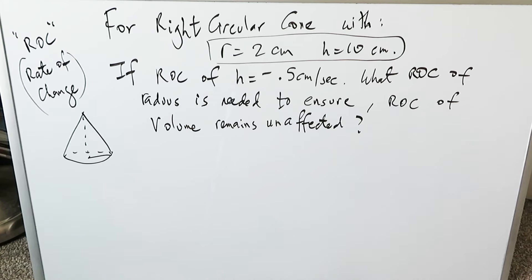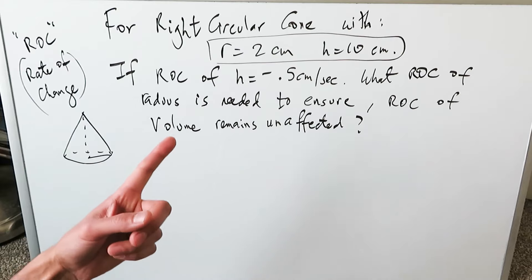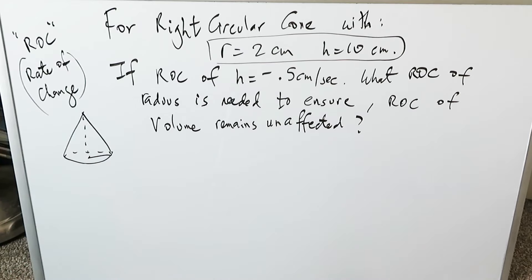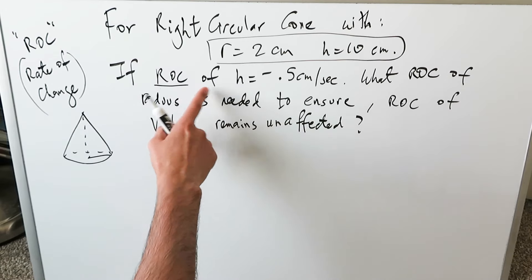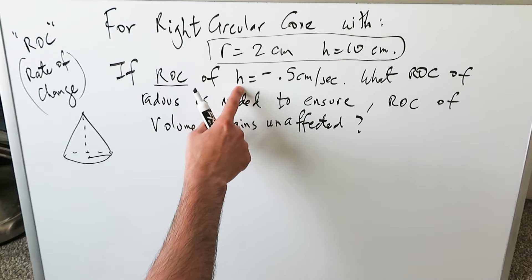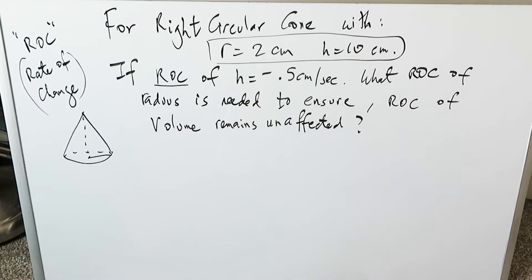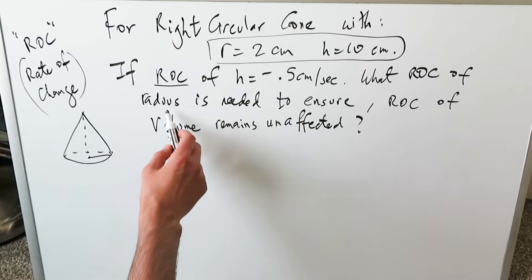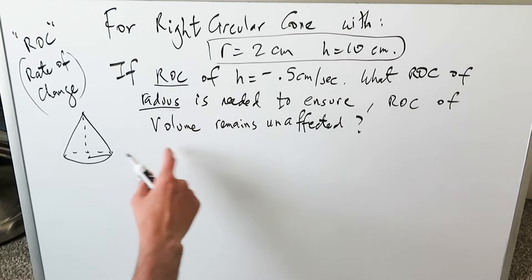We have in this question an examination of a right circular cone. It has a radius which will be 2 centimeters. The height will be 10 centimeters. The rate of change, as I'm abbreviating here, with regards to the height dimension is undergoing a change of minus 0.5 centimeters per second. What rate of change of the radius is needed to ensure that the rate of change of volume remains unaffected?